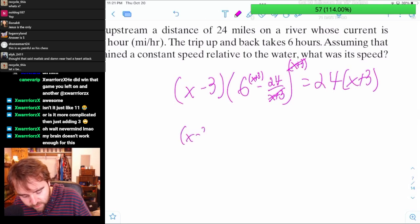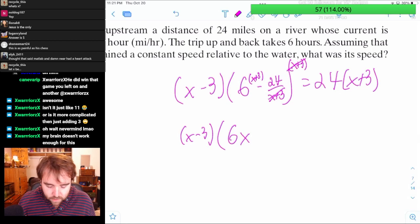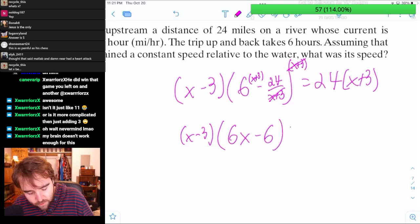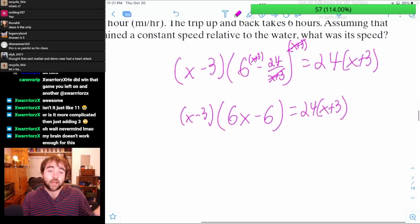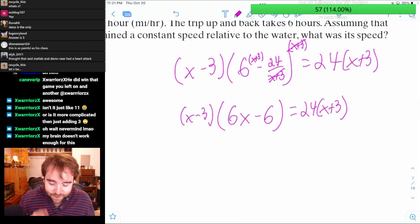Then I have X minus 3 times 6X, and then plus 18 minus 24, so that's minus 6 equals 24 times X plus 3. And this is what's nice, this has actually popped up every time I've tried it. Because this is like the third time I've tried it, believe it or not.